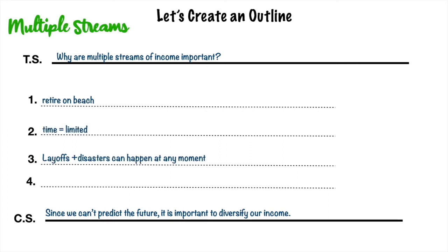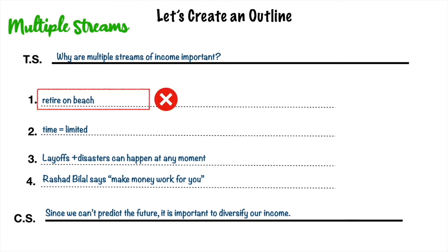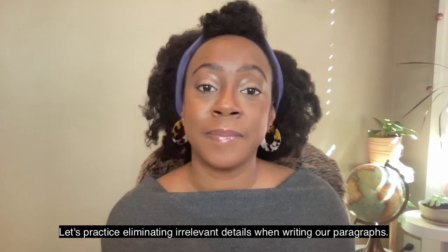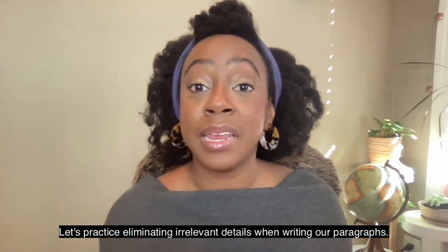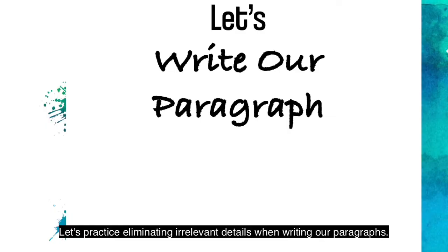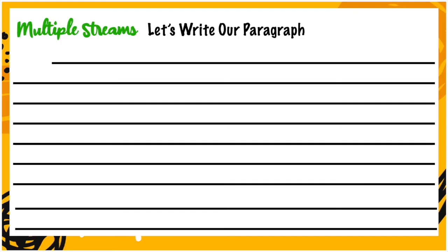Here are some details: retire on beach, time is limited, layoffs and disasters can happen at any moment, Rashad Bilal says make money work for you. Which information is irrelevant and what can we eliminate? It's the first one — 'retire on beach.' This doesn't explain to me why multiple streams of income are important.